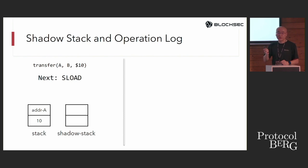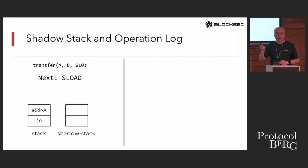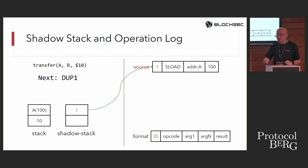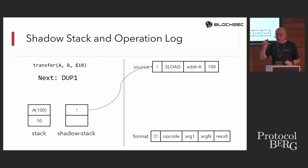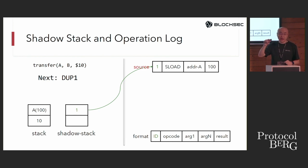When executing the transfer function, the transaction uses EVM opcodes. First, we load the balance of account A from storage — this is an SLOAD operation. We have a shadow state to log all operations. Each entry in the operation log records the opcode and the relationship between output and input. For the SLOAD, we insert log entry 1: instruction SLOAD, load storage, value is 100.